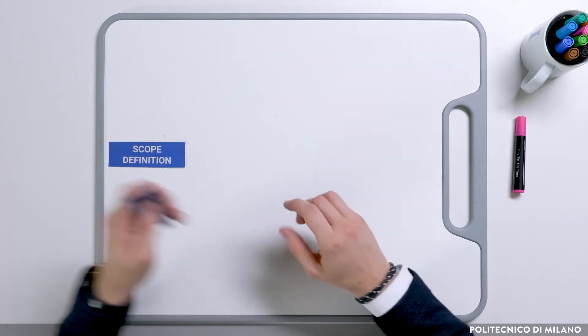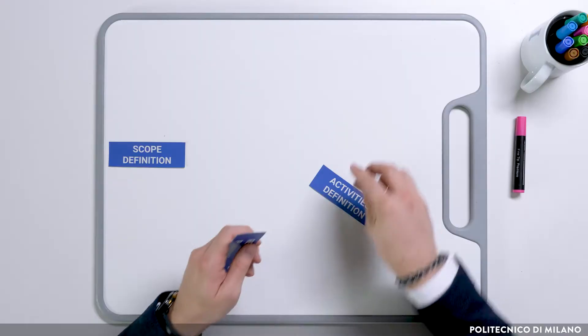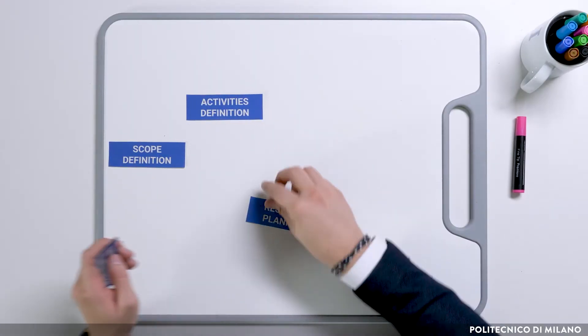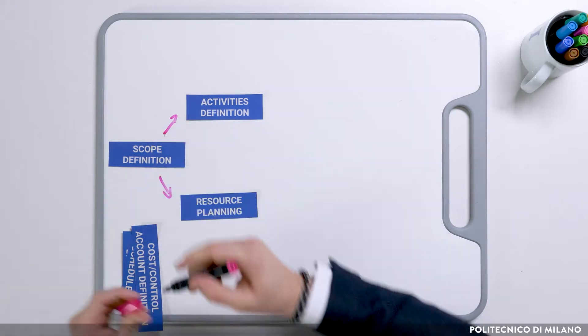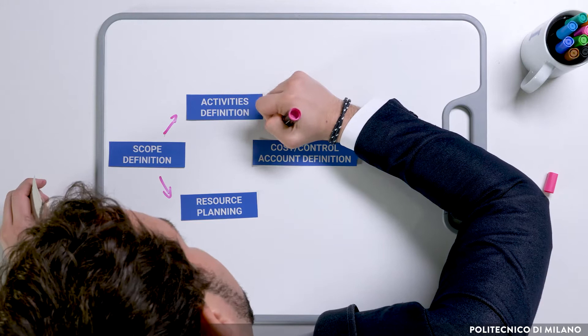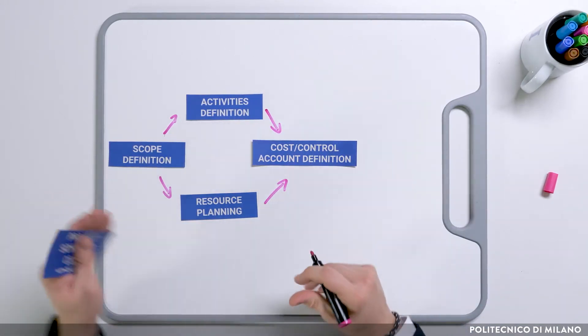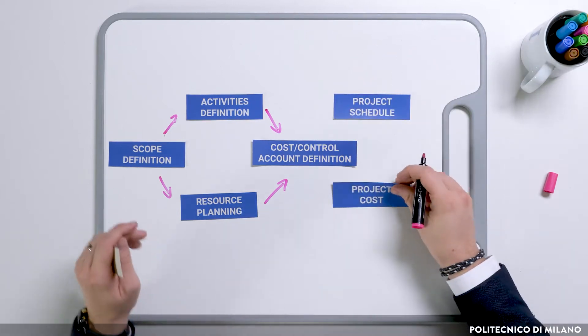Let's start with a brief sum up. In the planning phase, in the very first step, we should define the scope of the project through scope definition. Once we know what is and what is not part of our project, we can put in place two tools: the WBS for activities definition and the OBS for resource planning. These two views can be taken together with the RAM, defining who is going to do what and therefore defining the duration and cost of activities. This means we first define the cost control accounts, and then we can do the project schedule and the project cost.